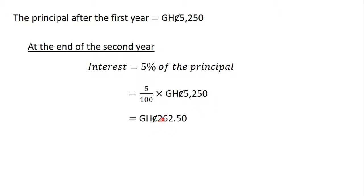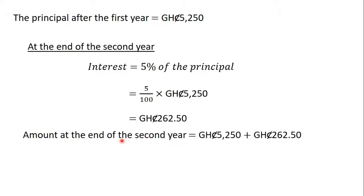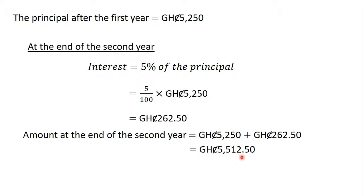This gives us two hundred and sixty-two Ghana cedis fifty pesewas. The amount of money Alabad has at the end of the second year is equal to the principal of five thousand two hundred and fifty Ghana cedis plus the interest of two hundred and sixty-two Ghana cedis fifty pesewas. Adding these two gives five thousand five hundred and twelve Ghana cedis fifty pesewas.